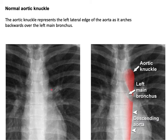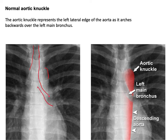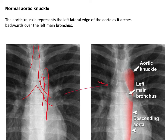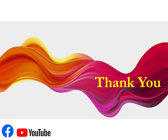On X-ray, the aortic knuckle is visible. Following the shadow of the trachea, we can identify the right and left bronchi, the arch of the aorta, and the descending aorta. A labeled X-ray with colors shows all these structures clearly. Thank you for listening and I hope you found value in this lecture.